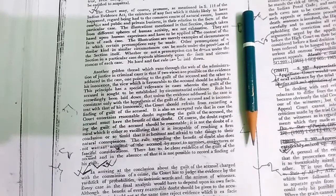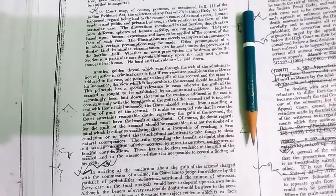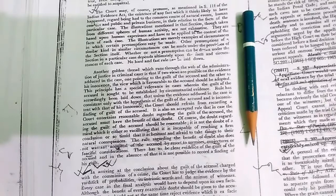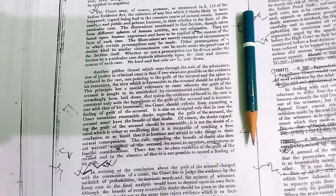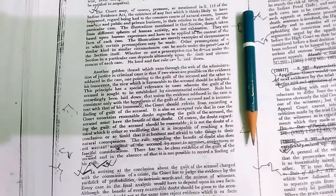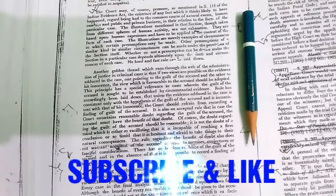It is also an accepted rule that in case the court entertains reasonable doubt regarding the guilt of the accused, the accused must have the benefit of that doubt. Of course, the doubt regarding the guilt of the accused should be reasonable.